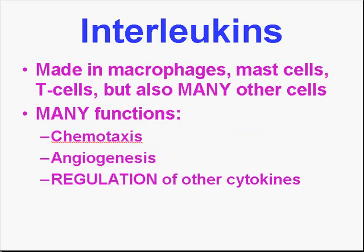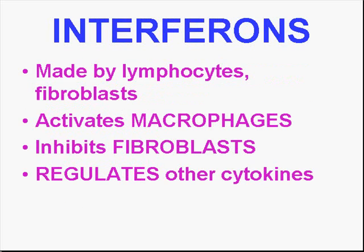Interleukins are made in macrophages and a wide variety of other cells. They're involved with chemotaxis, so interleukins could be called a chemokine. They are also involved in angiogenesis. Like TNF, the interleukins — especially interleukin-1 — are prime regulators of other cytokines. If there's only one thing you could remember as the prime action of growth factors, it's angiogenesis. We'll start the next chapter talking about interferons. Thank you very much.